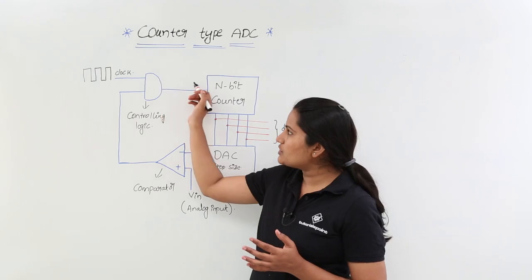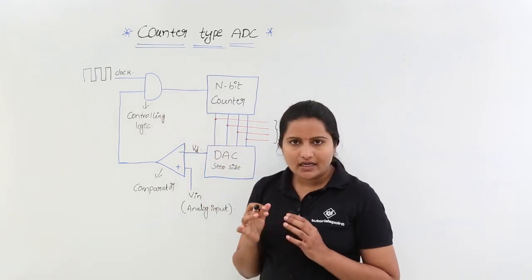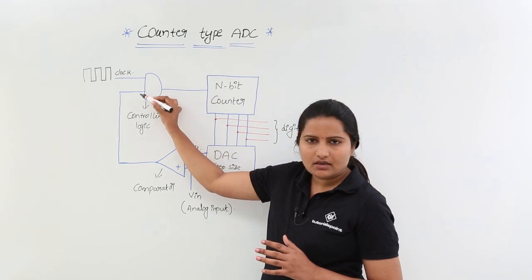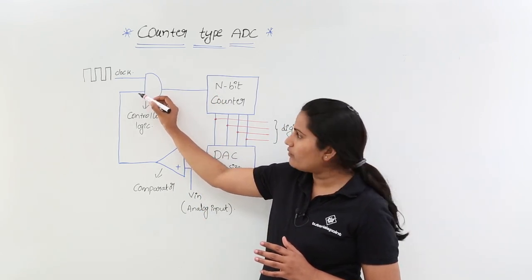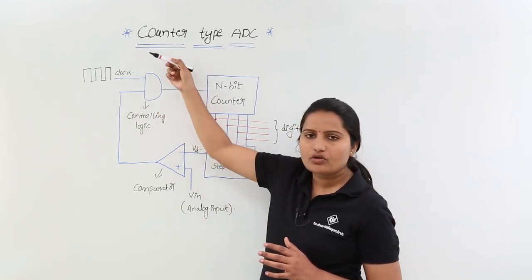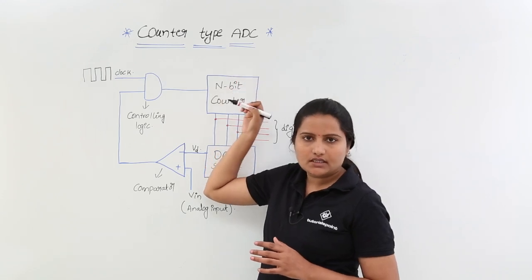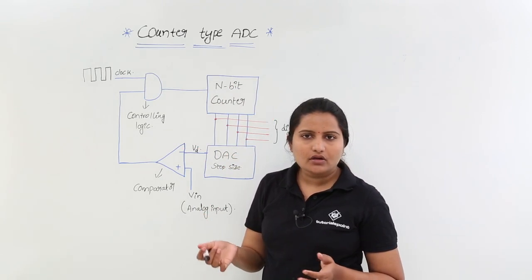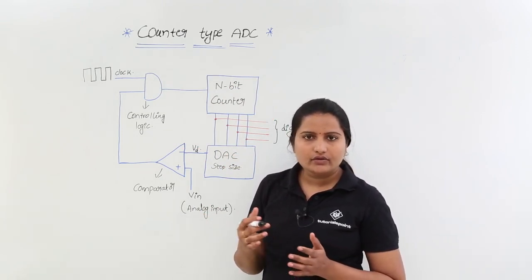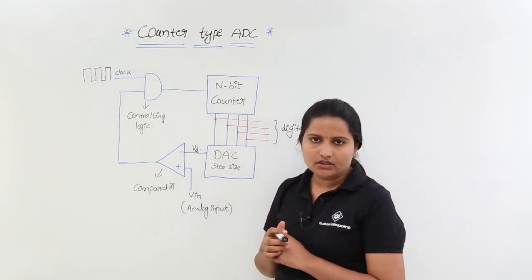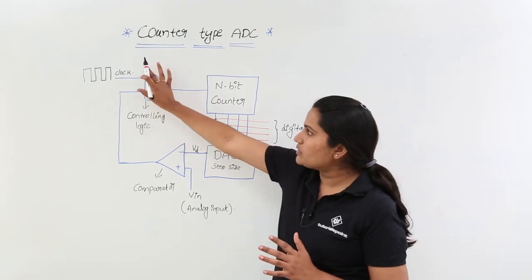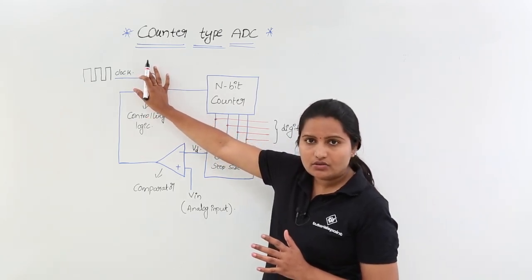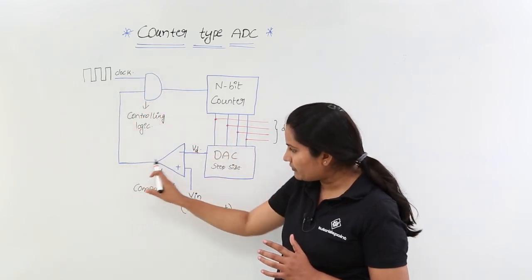The clock will reach the counter only when there is a 1 at the AND gate — that means 1 AND clock gives the clock signal through. Otherwise, clock AND 0 means the clock is not passed to the n-bit counter. This is the controlling logic; we can say this AND gate acts as a gate, and the key for this gate comes from the comparator output.